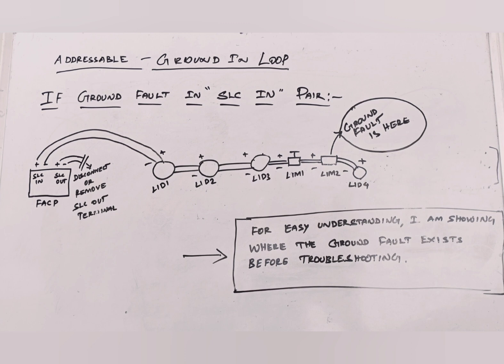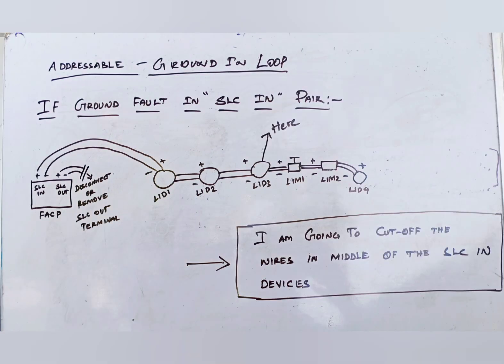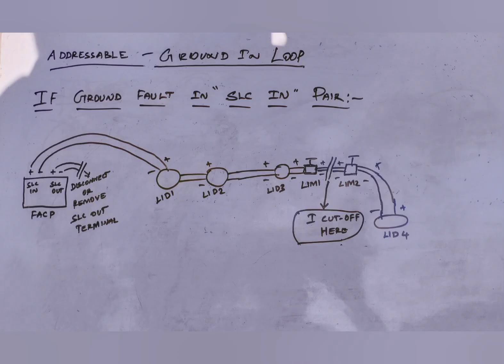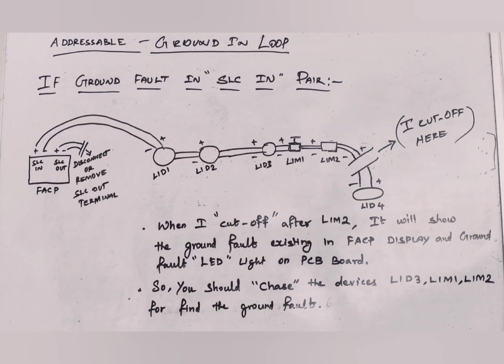L1M2 has ground fault as shown in figure. So I am going to cut off the continuity in the middle of SLC in pair wire. Then I will cut off the continuity in the middle of SLC in pair wire. The FACP will not show the ground fault exists, which means we need to go forward to find out the ground fault. The FACP will show the ground fault, which means we have the ground fault backward of the device. So we need to go backward to find out the troubleshooting of ground fault.